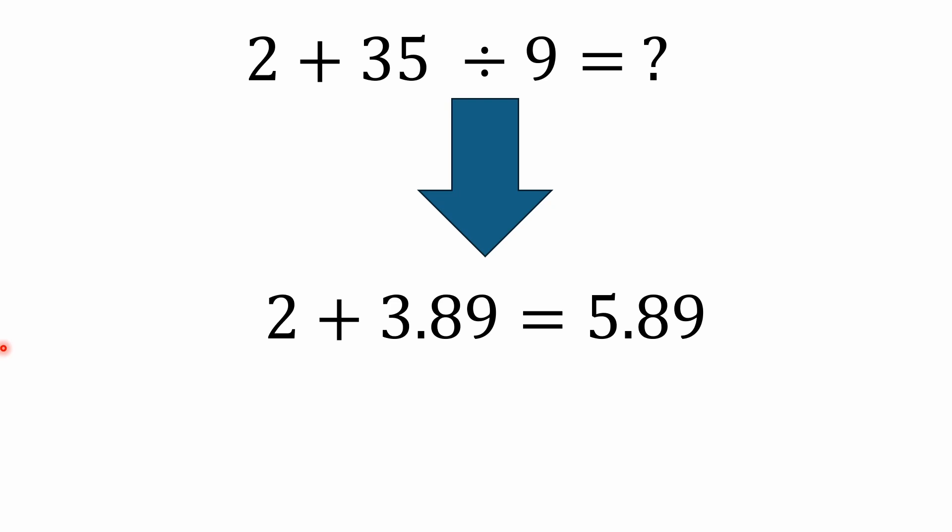And then you have 2 + 35 ÷ 9. Now here you don't add the 2 plus 35 and get 37 and divide by 9. Division still has precedence over addition.